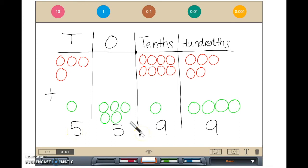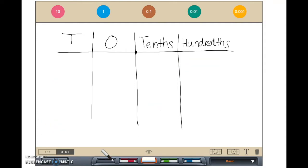The total is fifty-five dollars and ninety-nine cents. Lastly, we are going to move on to the algorithm and model how to solve it. We will write forty dollars and eighty-five cents plus fifteen dollars and fourteen cents vertically.